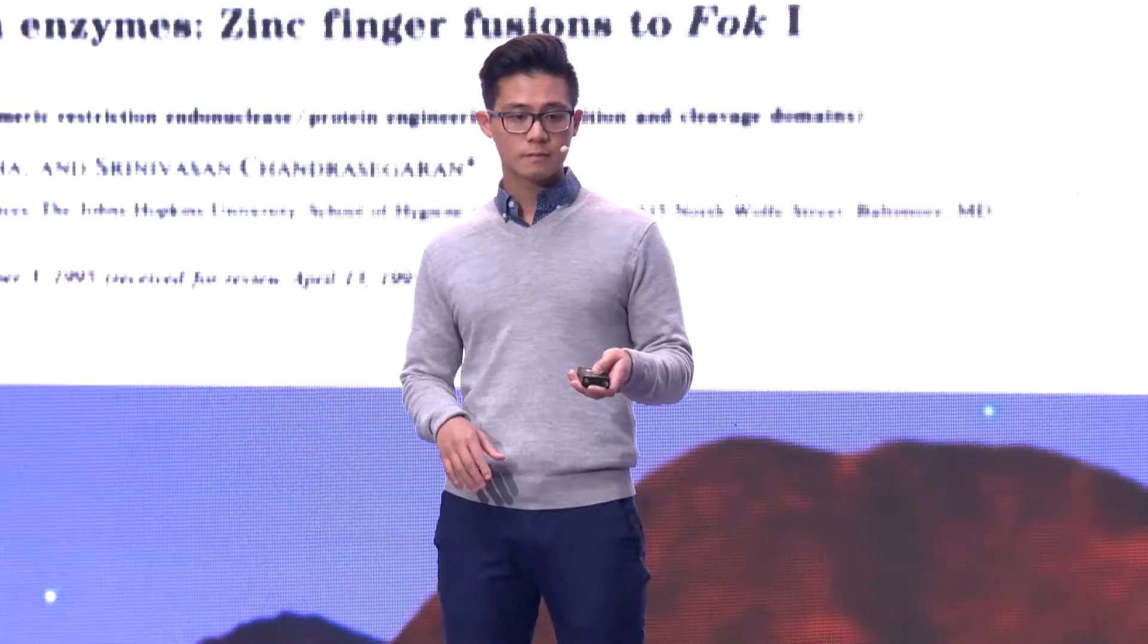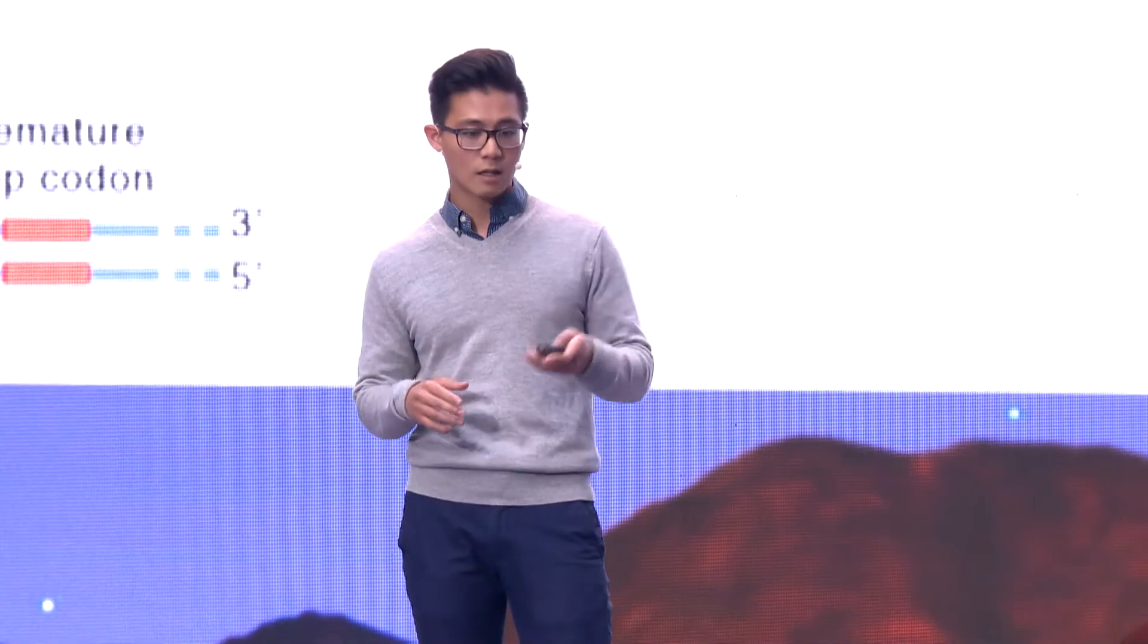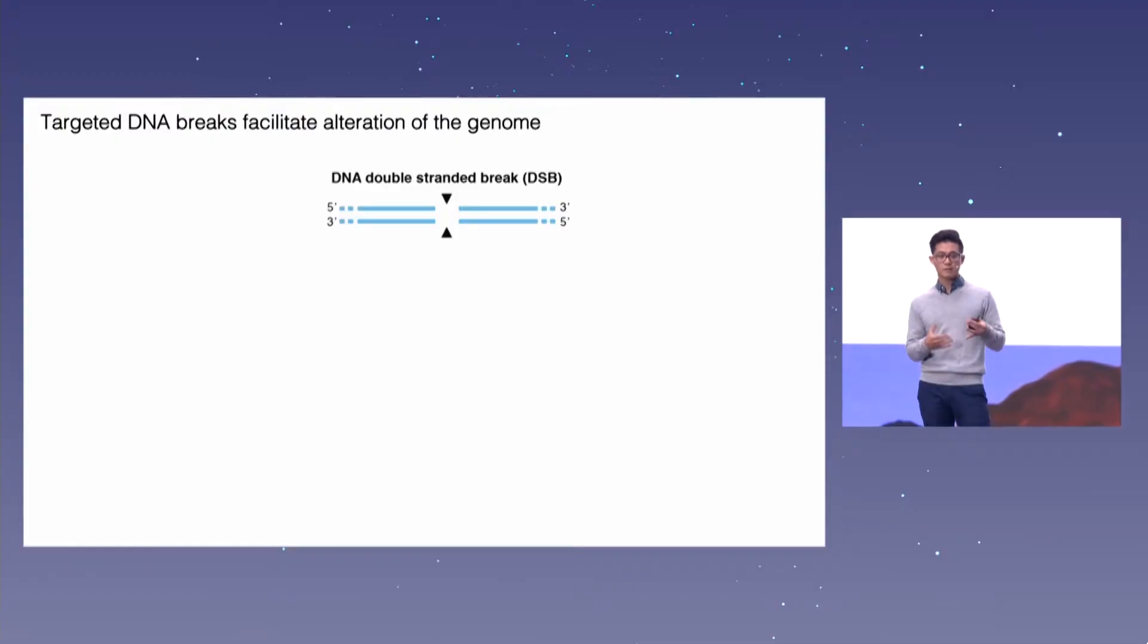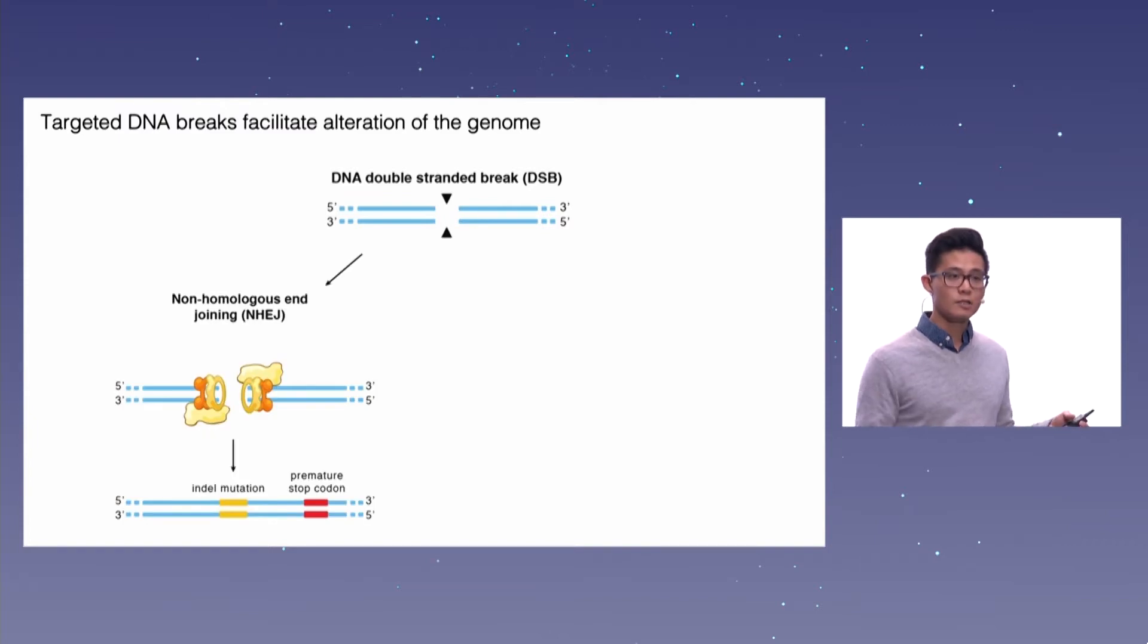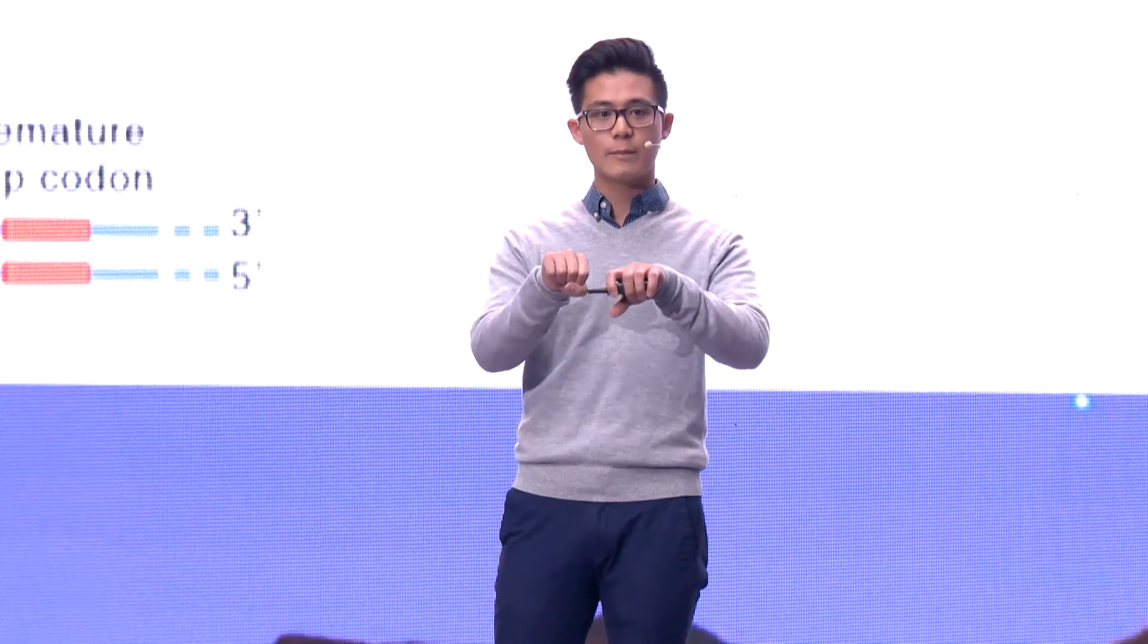So the idea here is that targeted DNA breaks can facilitate alteration in the genome. If you take some stretch of DNA, it's broken, the cell's going to attempt to stitch its DNA back together. And it can do those through one of typically two major repair pathways. One is known as non-homologous end-joining. And now that's quite a mouthful, but what that really means is the cell can summon a host of proteins that have high affinity to these broken DNA ends, and it'll try to stitch the DNA back together.